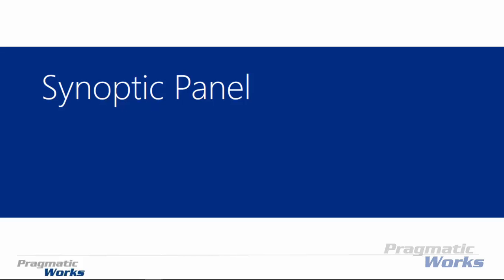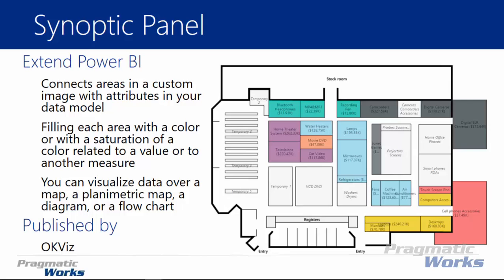Welcome to the Power BI Custom Visuals course. In this module we're going to be looking at the Synoptic Panel, which is really one of my favorite custom visuals. The idea is that you can take any image you have — ideally a floor plan or diagram — upload it to the Synoptic Panel website and Designer, then outline different areas of your image that you want to place data on top of. In this example on the right you can see a store plan diagram where they've outlined the different areas that sell items, so you can see which areas are getting the most activity and purchases.